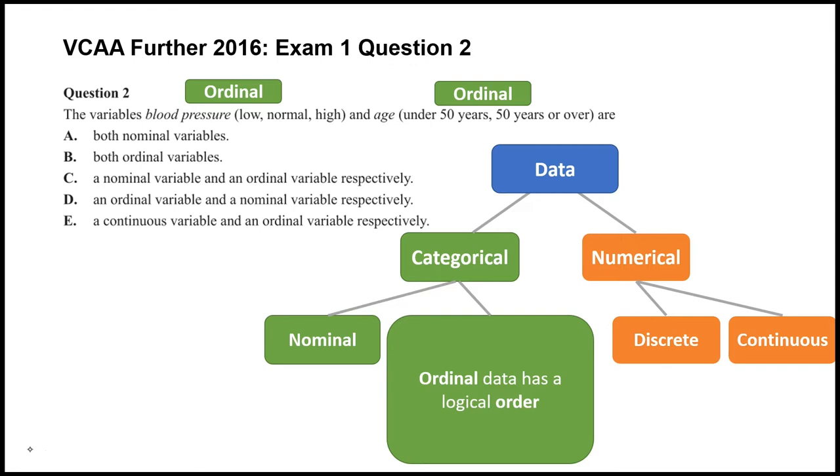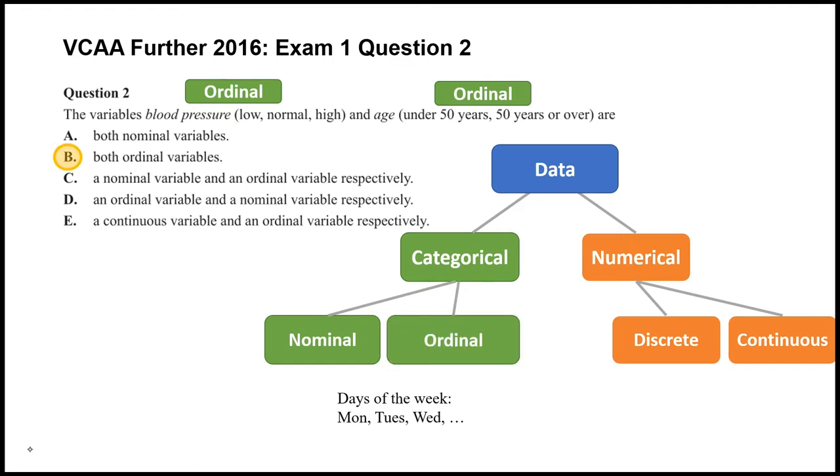Sometimes you could get a grey area with these types of data classification. For example, something like days of the week—Monday, Tuesday, Wednesday—it's definitely a category, and you could say it does have an order because Monday comes before Tuesday comes before Wednesday. But where would you put Sunday? Would you put it at the end of the week or at the start? There's probably some grey area there, but in your VCAA exam you're probably not going to come into a situation like that. In this case, blood pressure (low, normal, high) and age (under 50 and 50 plus) are definitely categorical ordinal variables, so the answer there is B.